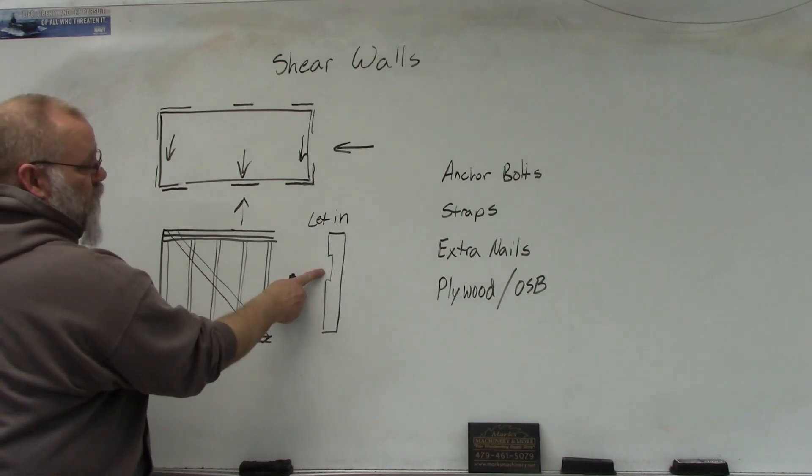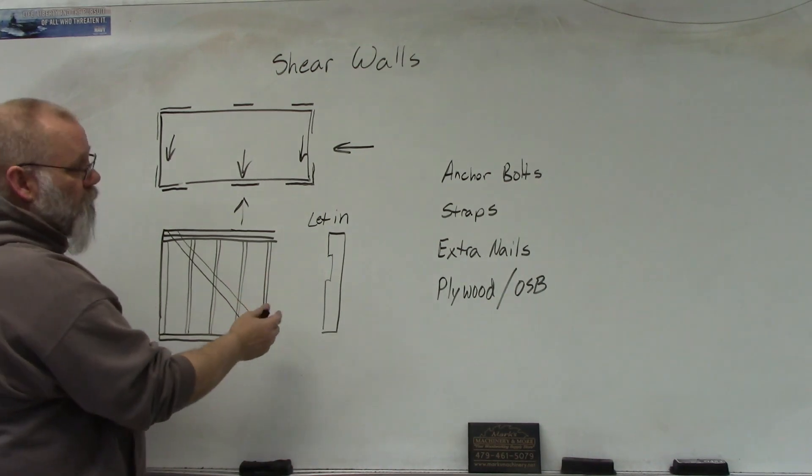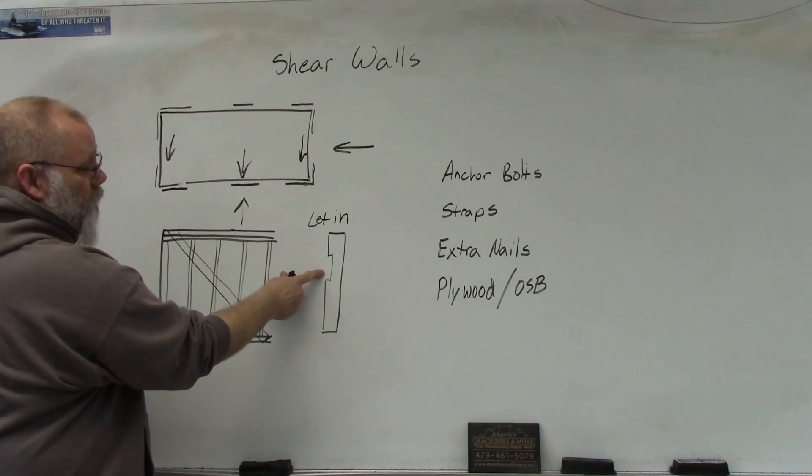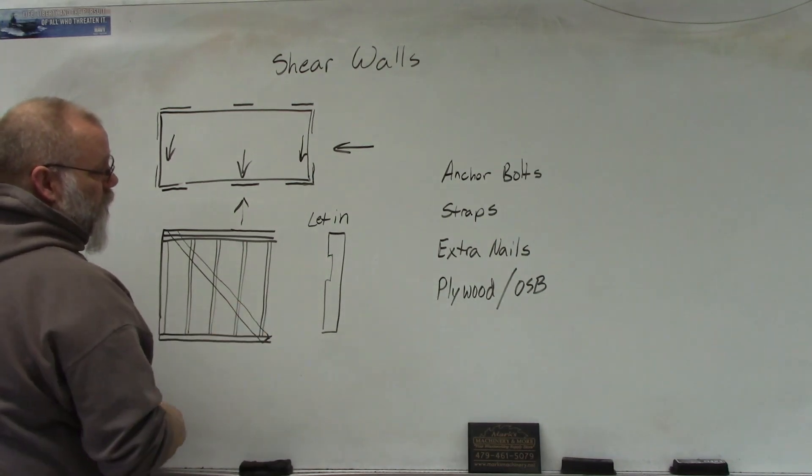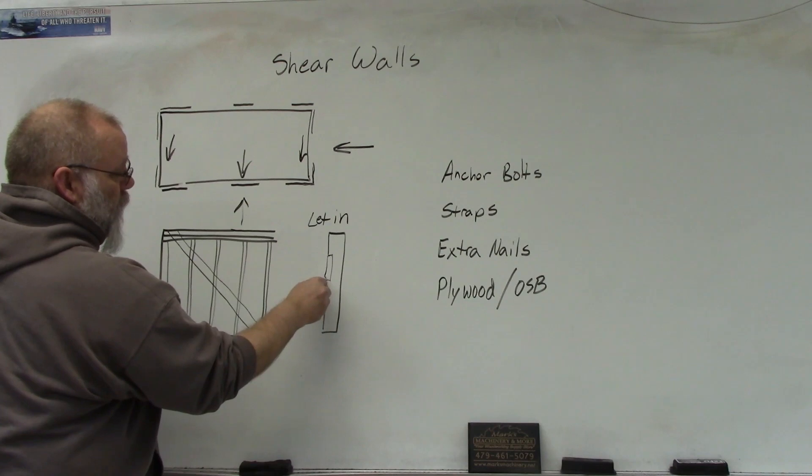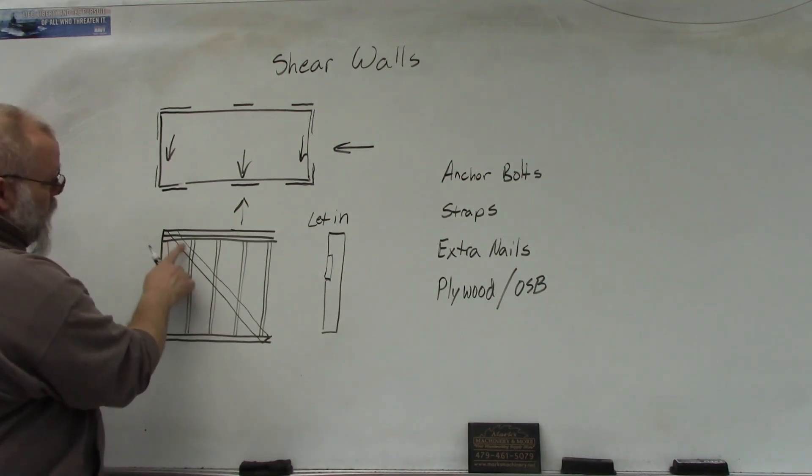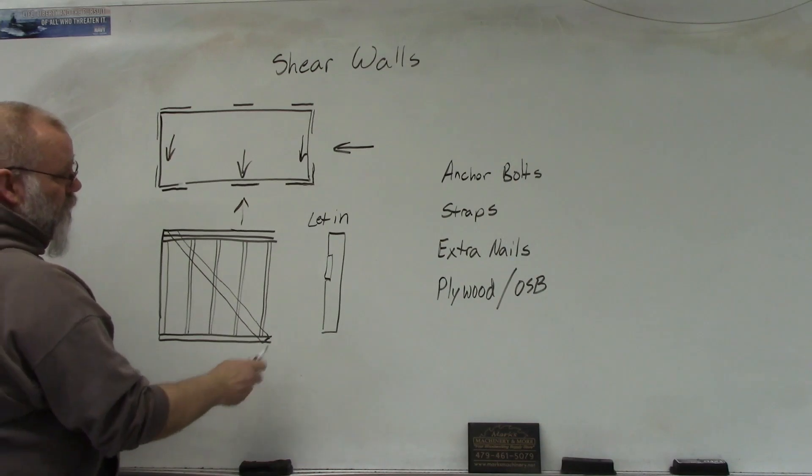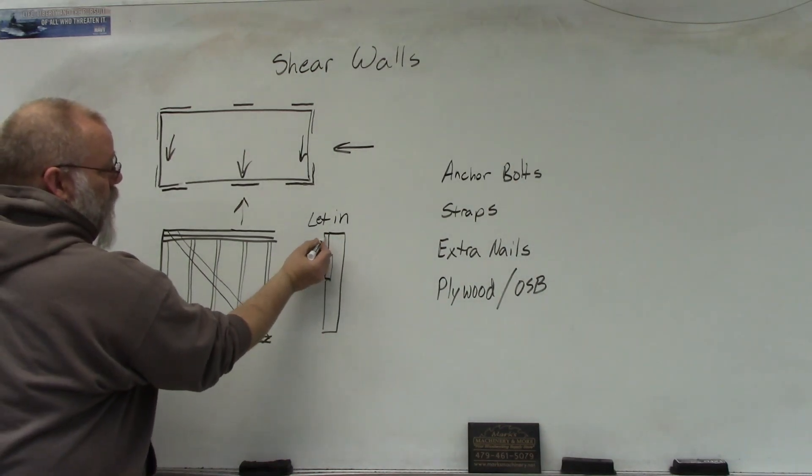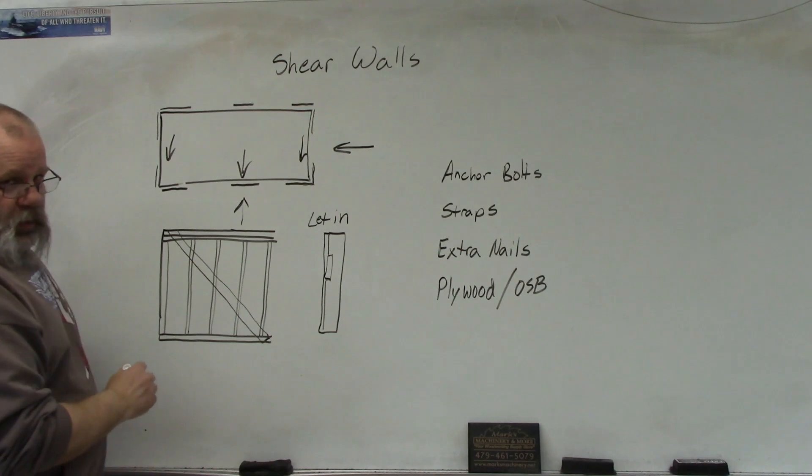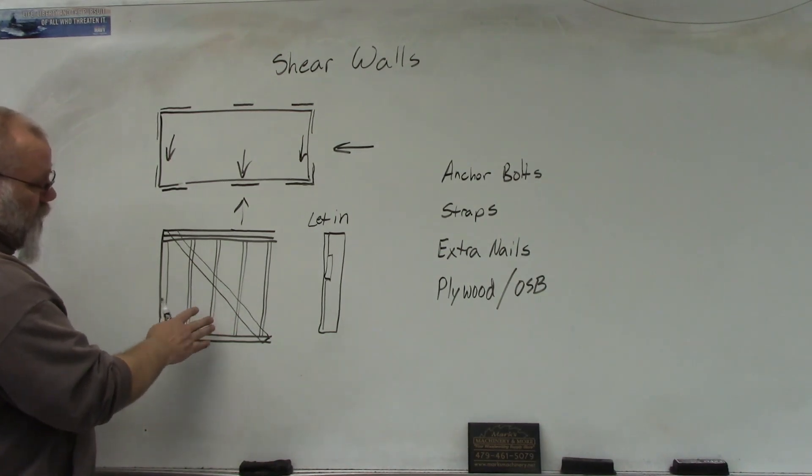A let-in is just where you would cut into the stud the thickness of your board, in this case a 1x4. So we would let in three quarters of an inch and then that 1x4 would be nailed into the stud at an angle. It has to go from the bottom plate all the way up to the top plate. All those have to be cut and then that board has to be let in so that when they add something to the outside of the house it would be flush. So this was pre-1980s, like 1970s and sooner they did this.